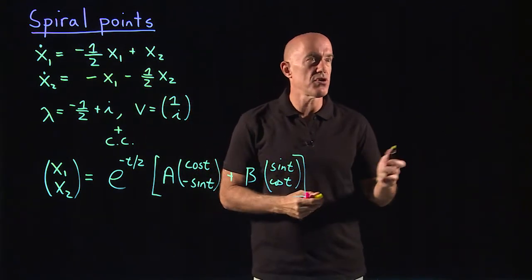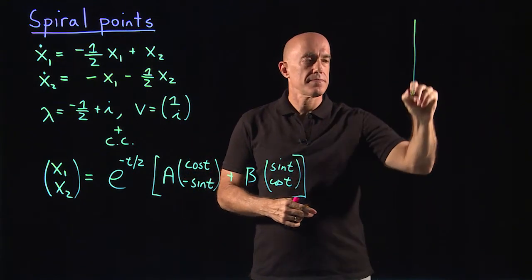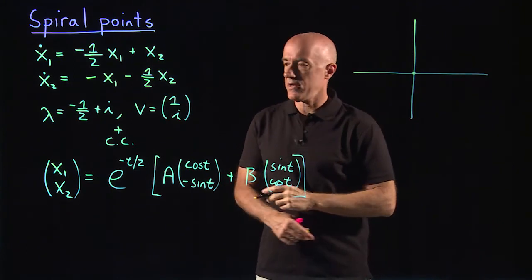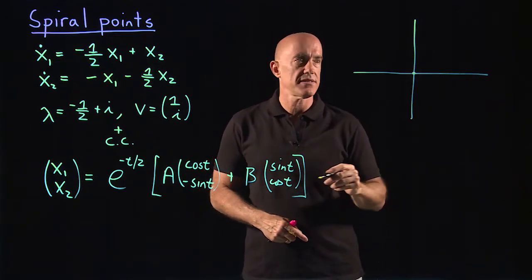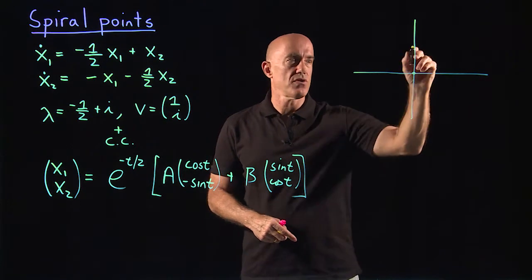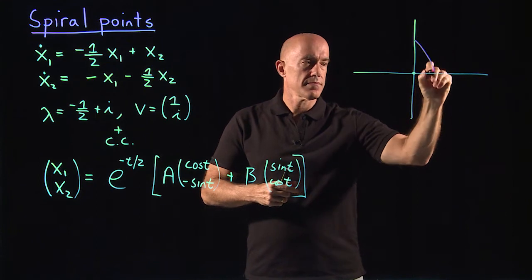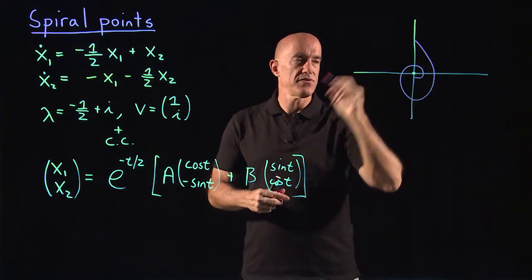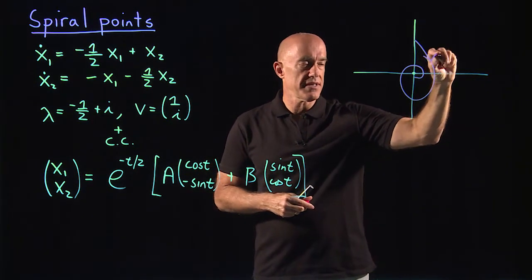So let me show you what the solution might look like. The origin is the fixed point, and it's decaying exponentially, so the fixed point is stable. And the solution is spiraling into the origin. So it could look something like this, and then you spiral into the origin. And because it's stable, it's going in.